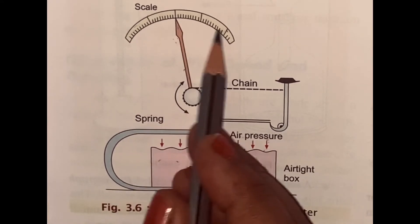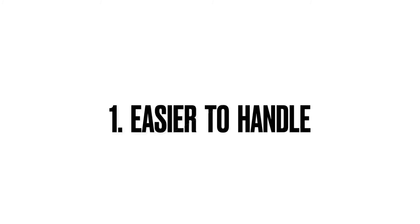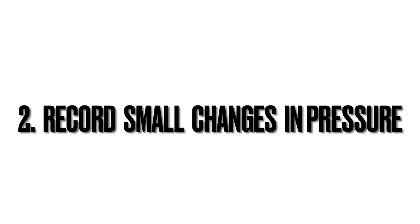Let's see the advantages of aneroid barometer. Number one, as there is no mercury column, it is compact and easier to handle. Number two, it can be used to record even very small changes in atmospheric pressure.